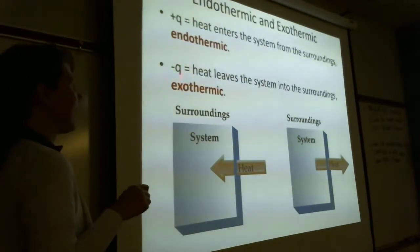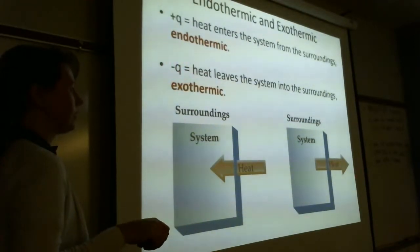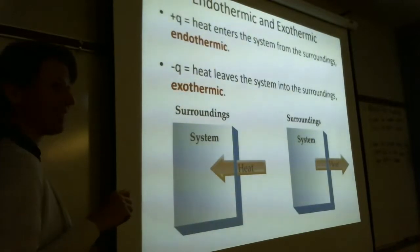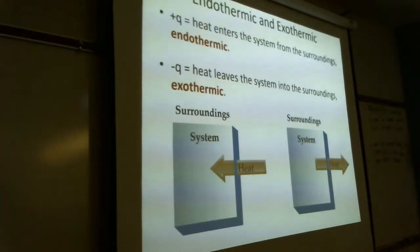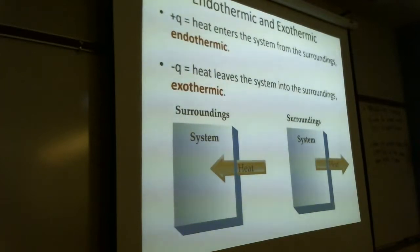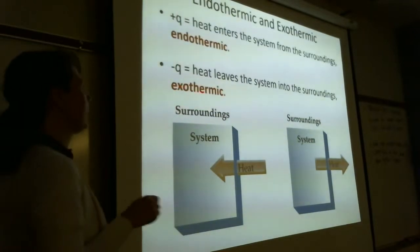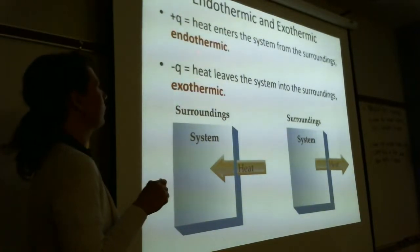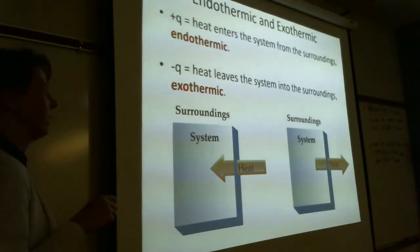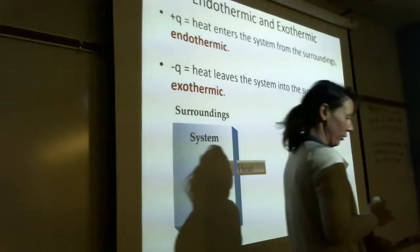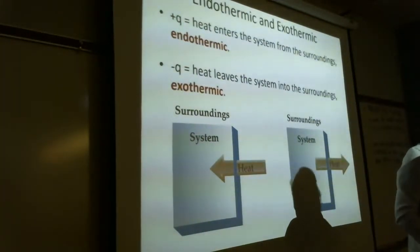And if Q is negative, that means heat is leaving the system — so exothermic, with X like exit. So positive Q is endothermic, negative Q is exothermic. We're going to be doing lots of calculations of Q, so looking at the sign of Q is going to be really important. Positive Q: endothermic. Negative Q: exothermic.